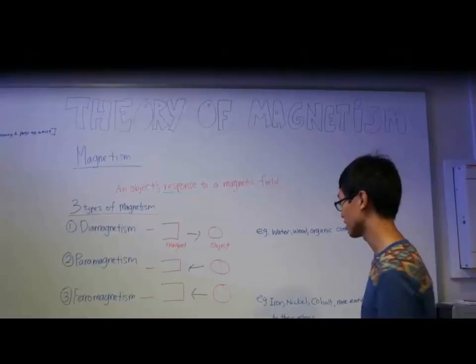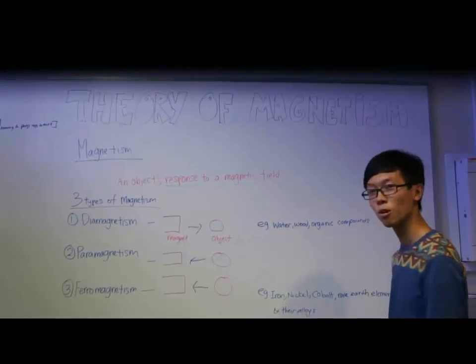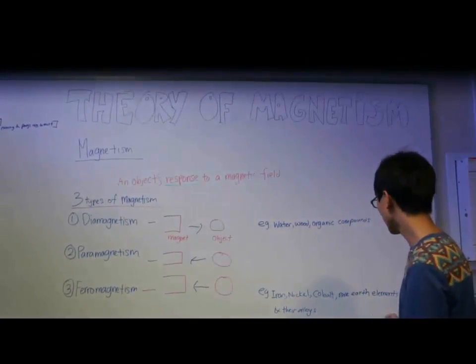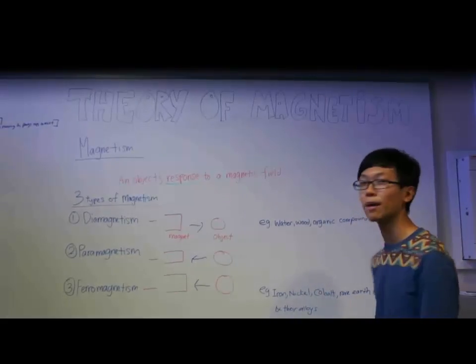For ferromagnetism, the examples are iron, nickel, cobalt, or rare earth elements and the alloys that include them.